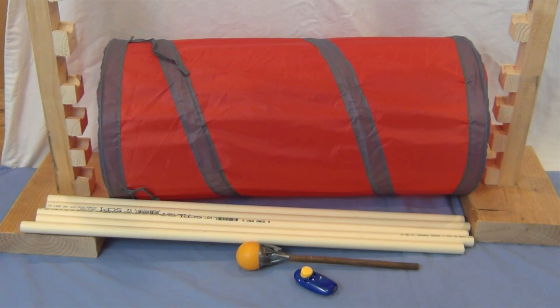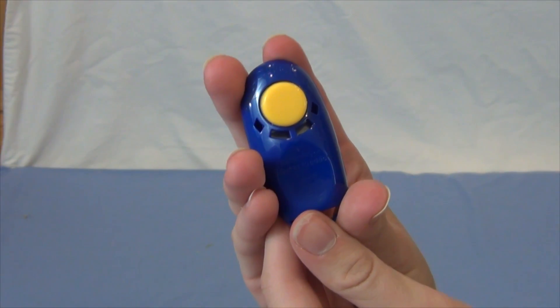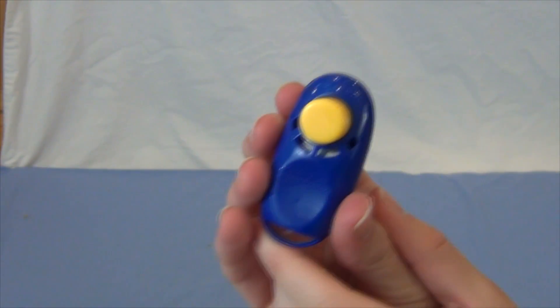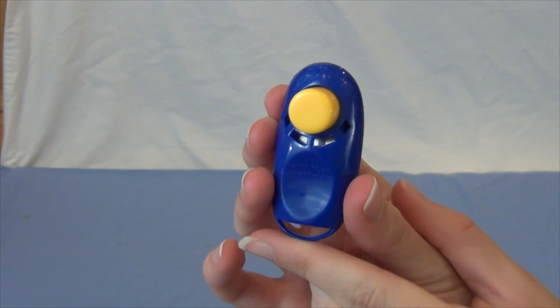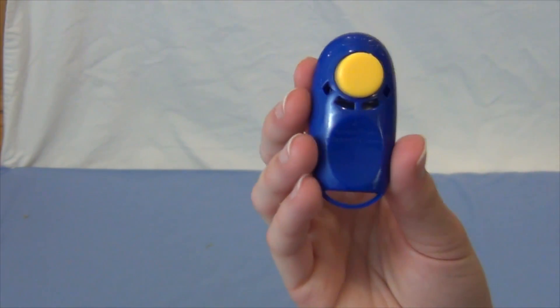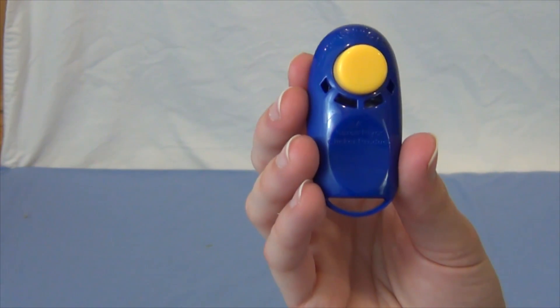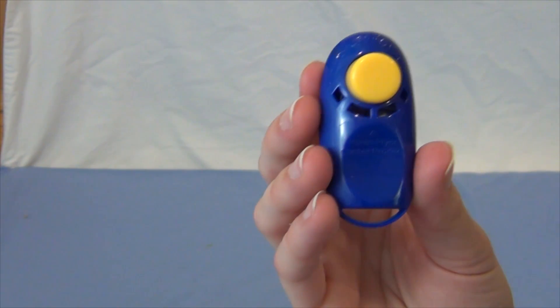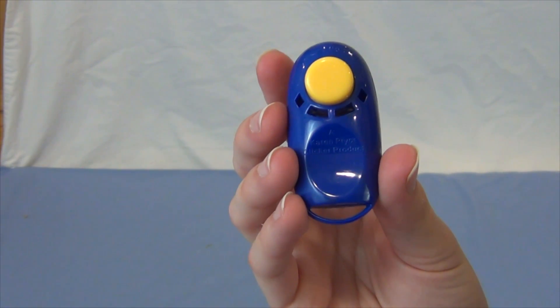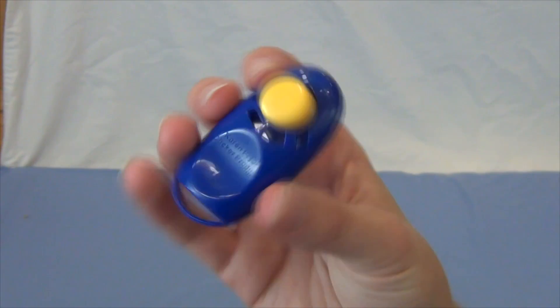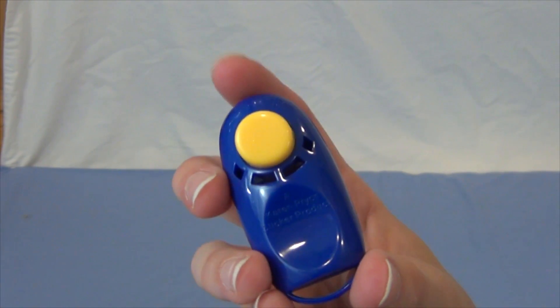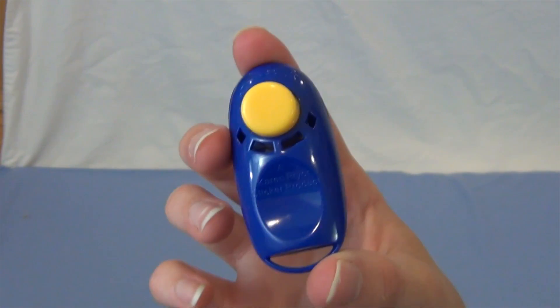So the first thing I'm going to be showing you is a clicker and honestly a clicker is one of the most important things when training your rabbit. Now you don't have to use a clicker. I know some rabbits are deaf. Mocha isn't deaf but he doesn't hear a lot of things. I don't know if it's selective hearing or if he just doesn't hear very well. So I don't really need a clicker for him but I think it really helps for rabbits like Lulu and Ebony who can hear.